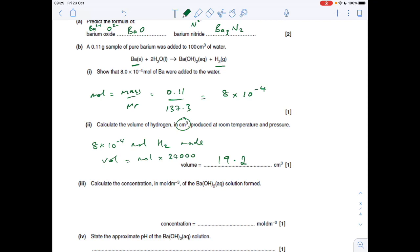The concentration in moles per decimetre cubed of the barium hydroxide solution formed. So again, we know the moles of barium. The moles of barium hydroxide is going to be the same as well because of the one-to-one ratio. So the concentration is moles divided by volume. So it's eight times ten to the minus four. The volume, it's 100 cm cubed of water. So that's 0.1 of a decimetre cubed. So the concentration comes out at eight times ten to the minus three.